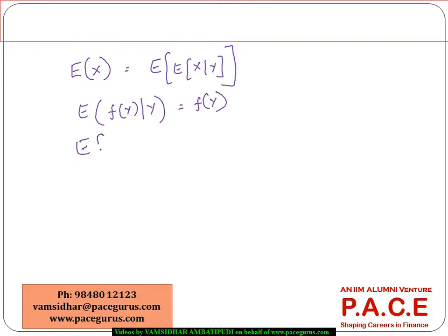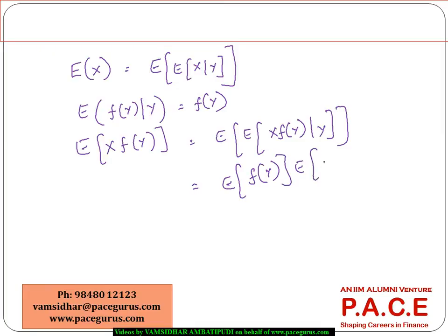Then, if I am looking at the expected value of expected value of x, f of y, probably take it this way. Expected value of expected value of x, f of y given y. And this, in turn, will become expected value of f of y times the expected value of x, f of y. All these things are the different kinds of manipulations that can be done on the expected values.